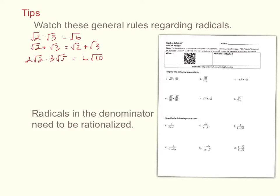You've got to have like radicals if you want to add them, but you can multiply any radicals together. All radicals need to be simplified. For instance, root eighteen has a perfect square factor of nine, so you break it up as root nine times root two. The square root of nine is three and the square root of two stays, giving three root two. If you multiply radicals and end up with a radical that needs to be reduced, you have to reduce it.